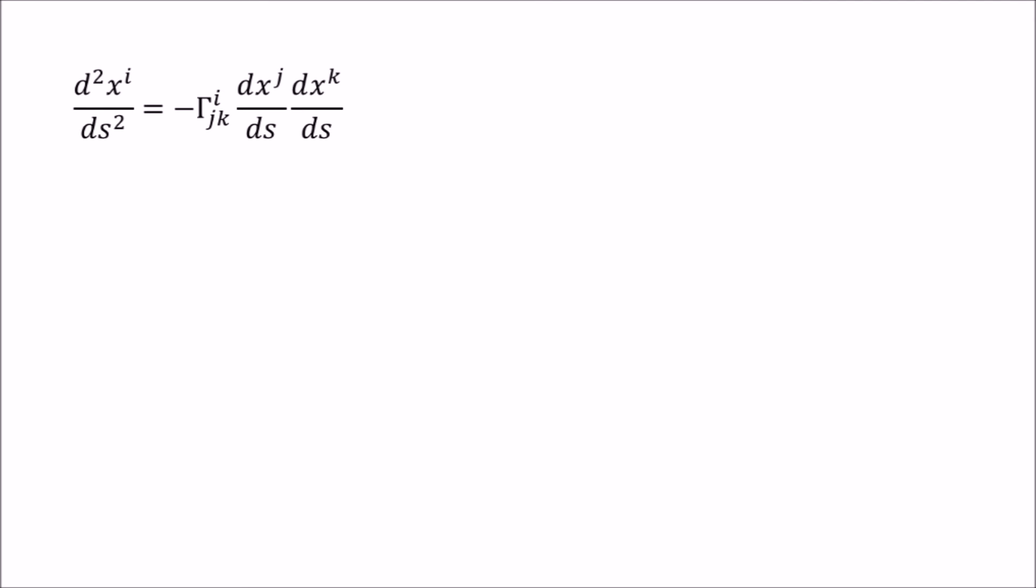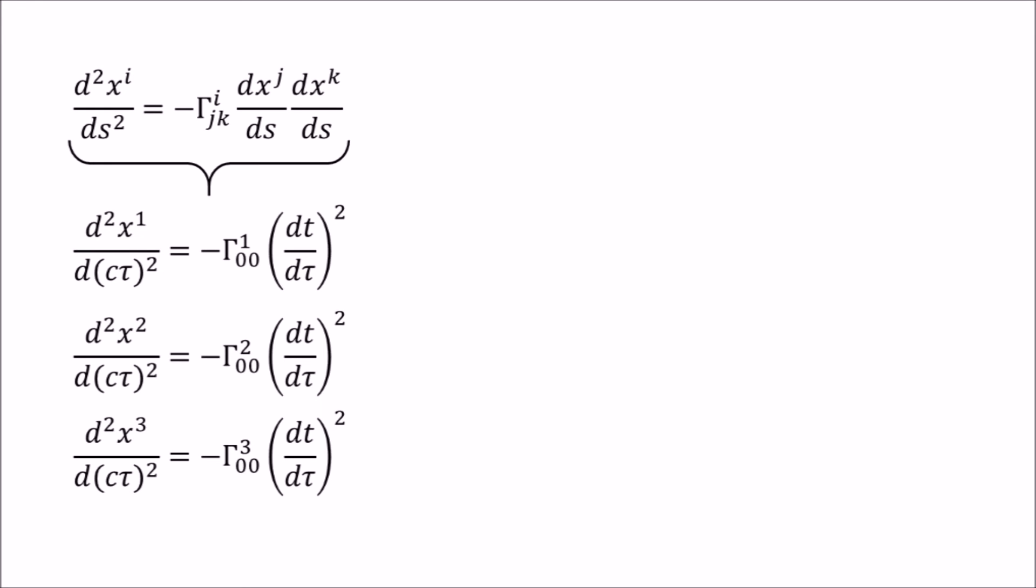In the small velocity limit, the spatial part of these four equations reduces to this. All other terms in these three equations are of order v over c and v over c squared. That means we only need to concern ourselves with these Christoffel symbols.